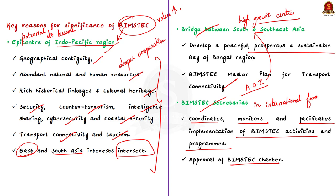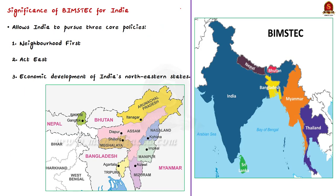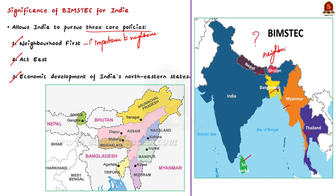Let us see why BIMSTEC is significant to India in particular. BIMSTEC as an organization allows India to pursue three core policies: neighborhood first, act east policy and economic development of India's northeastern states. The neighborhood first policy becomes relevant because it gives primary importance to the country's immediate periphery — the neighboring countries. The members of BIMSTEC include Bangladesh, Bhutan, Nepal, Sri Lanka, Myanmar and Thailand — these are all neighbors of India, except for Thailand. So this neighborhood first policy becomes relevant here.